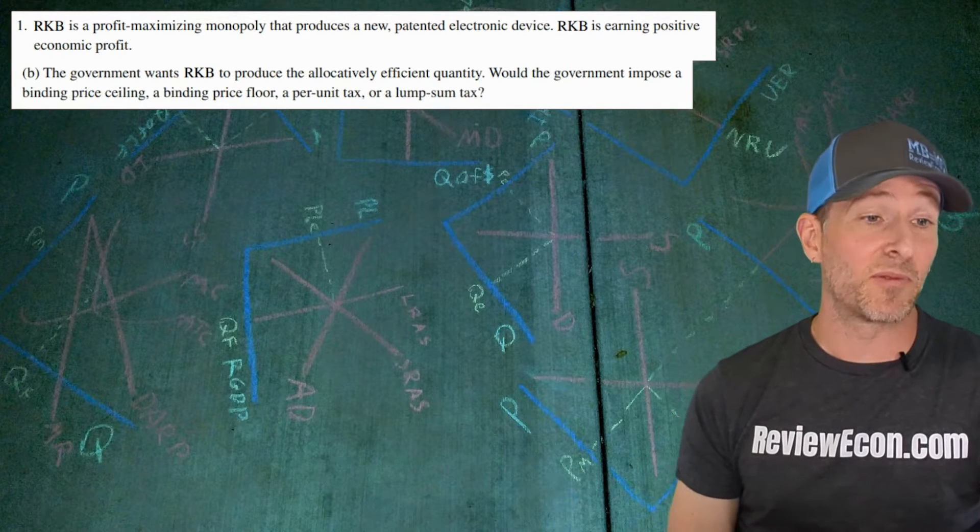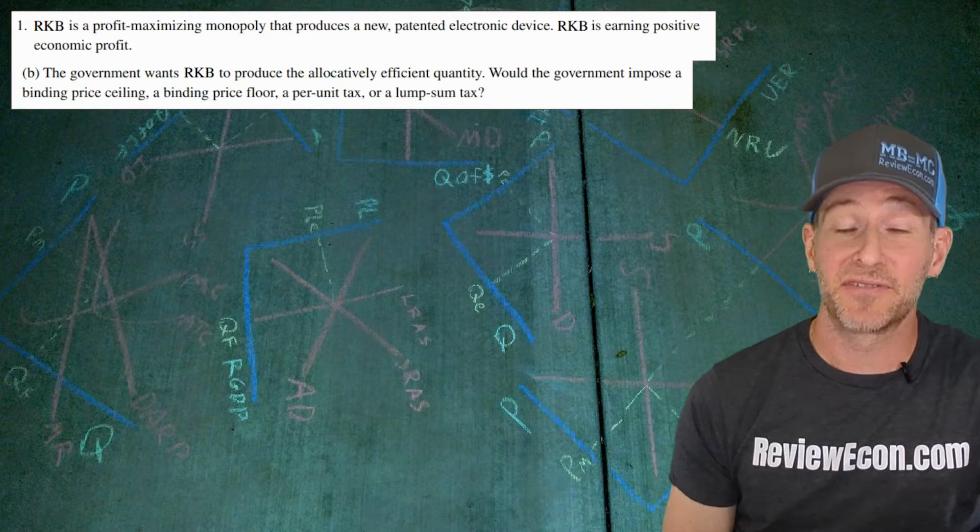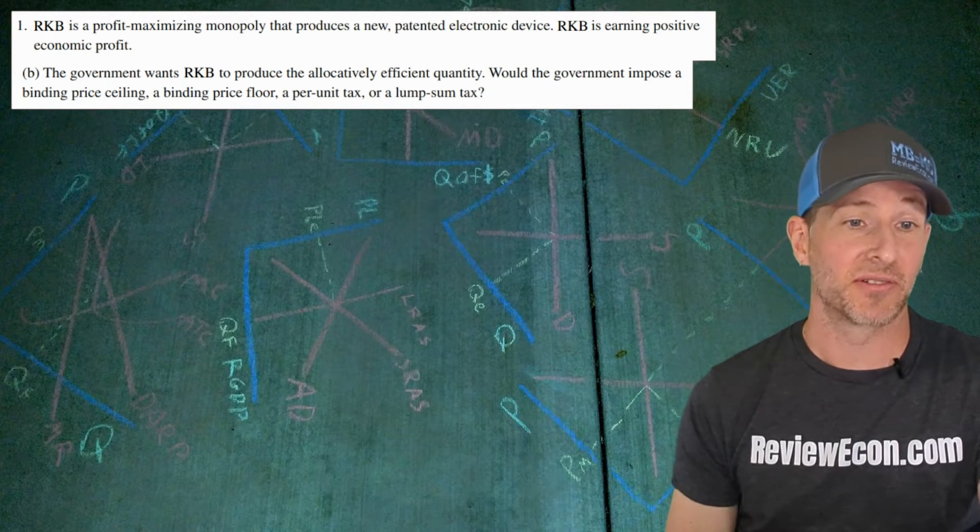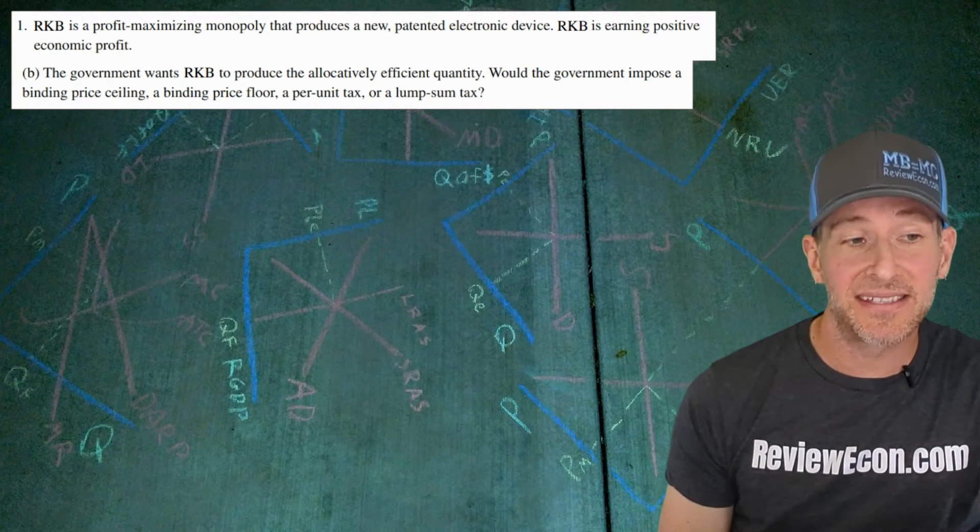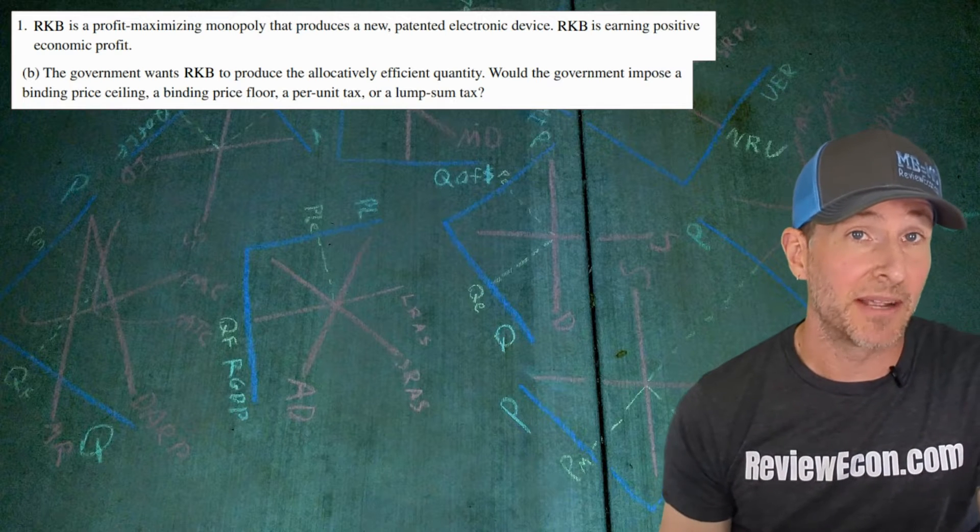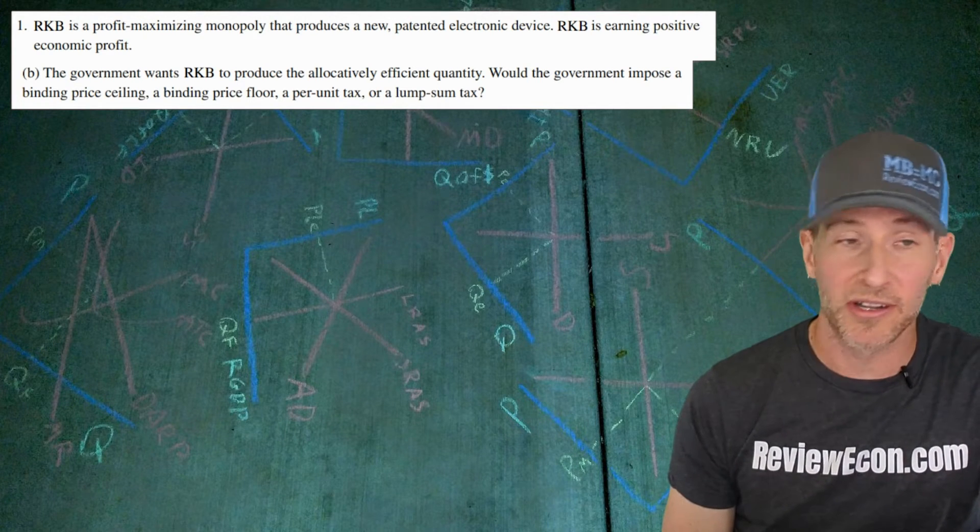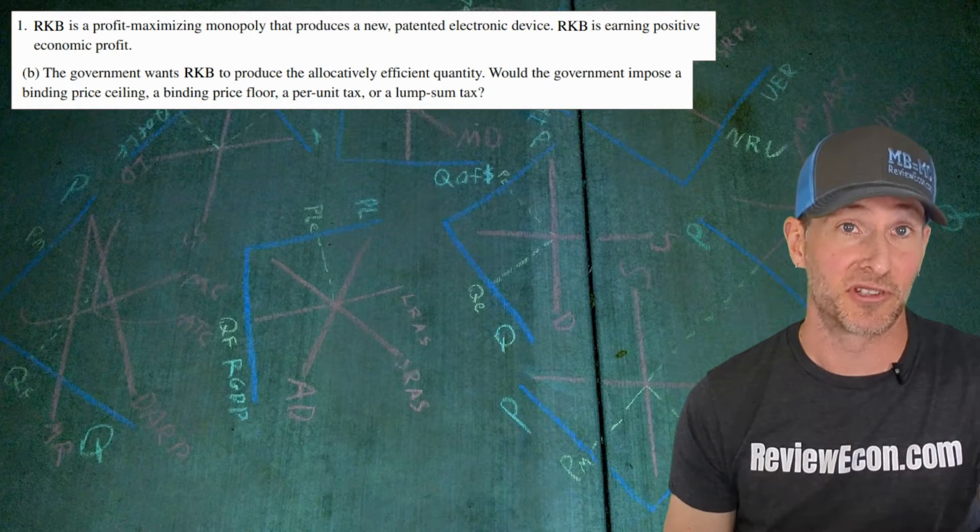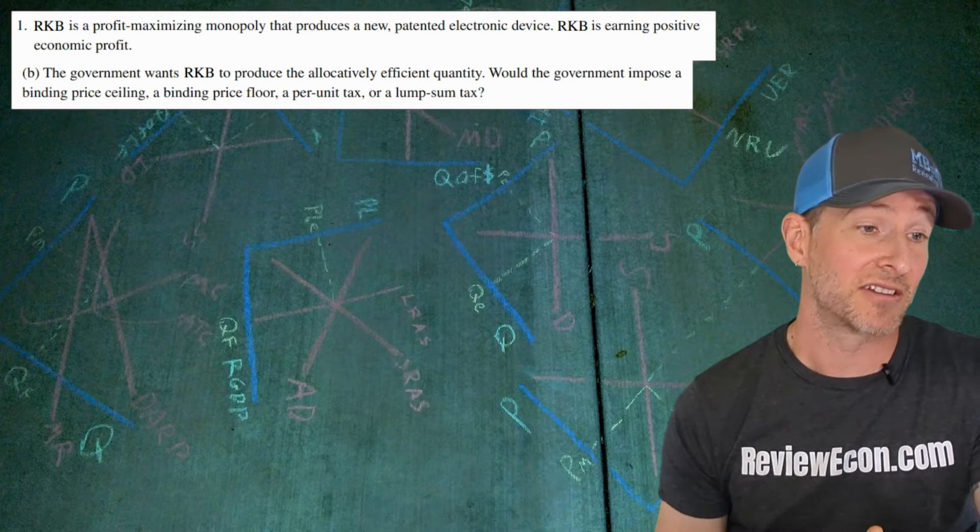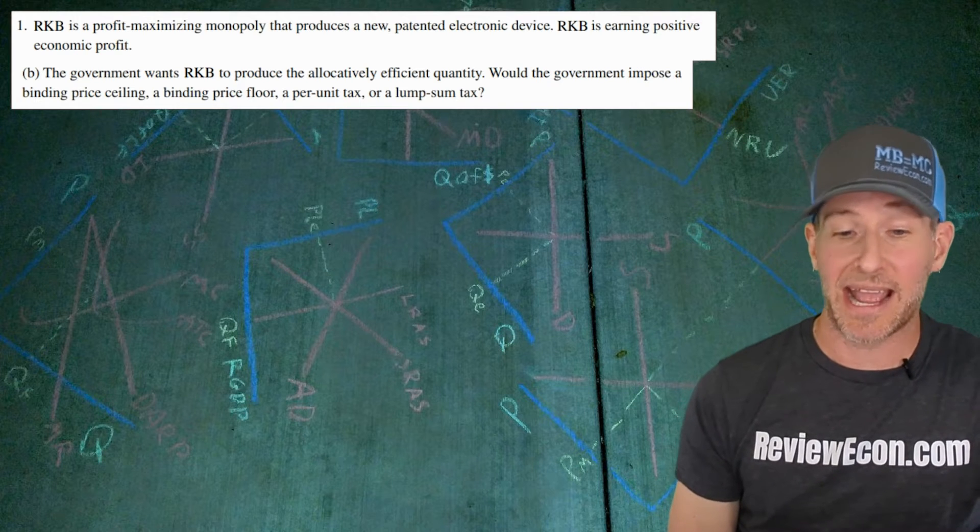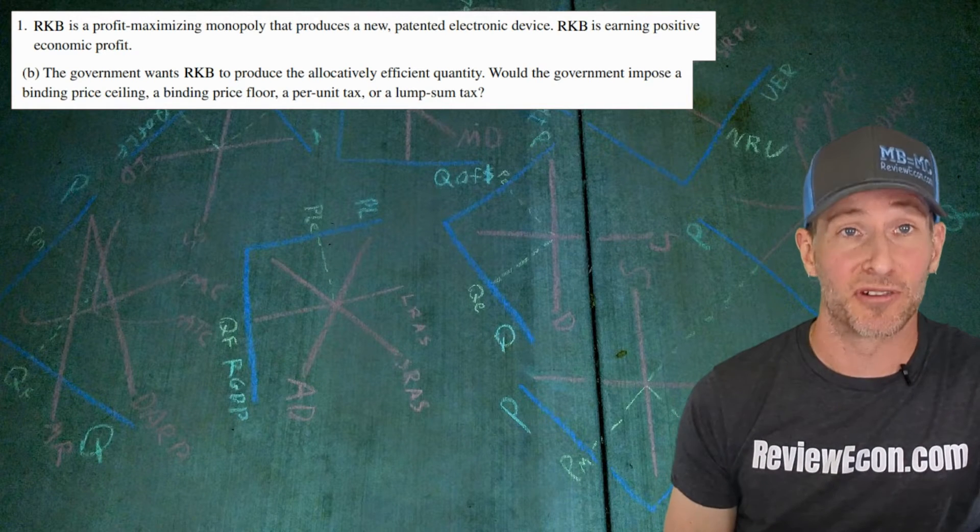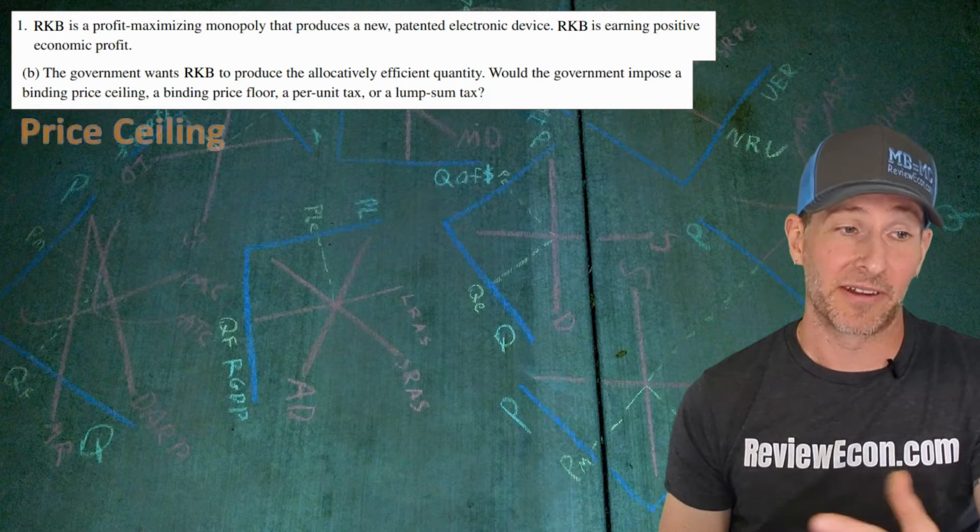On to the next part. The government wants RKB to produce the allocatively efficient quantity, which is where the price equals the marginal cost or demand equals marginal cost on the graph. Would the government impose a binding price ceiling, binding price floor, per-unit tax, or lump sum tax? So if we're wanting to regulate monopolies, a per-unit subsidy could work which would lower marginal cost, causing them to produce more. But that's not a choice here. So the only other alternative that would cause them to produce more output could be a binding price ceiling. And that price ceiling would be the price where demand equals marginal cost. That would get it.